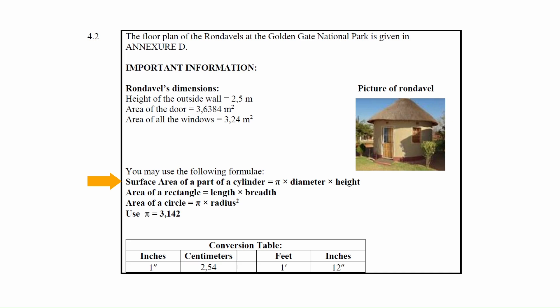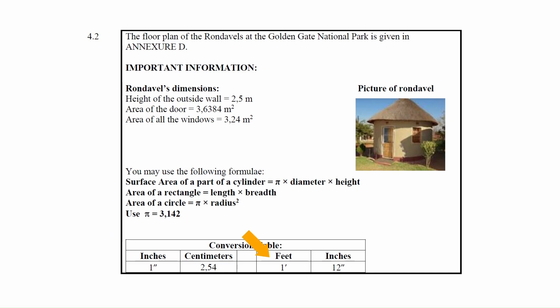The formulae provided are: surface area of part of a cylinder equals pi multiplied by the diameter multiplied by the height, where pi is 3.142; area of a rectangle equals length multiplied by breadth; area of a circle equals pi multiplied by radius squared, where pi is 3.142. A conversion table is also given with conversion factors between inches and centimeters and feet and inches.